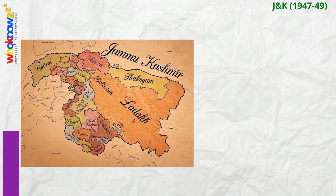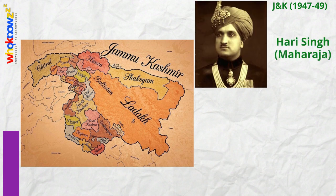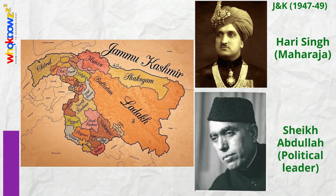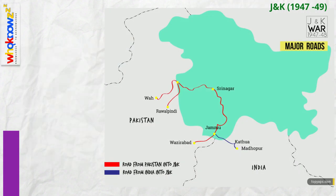Jammu and Kashmir, 1947–1949: At the time of the transfer of power, the state of Jammu and Kashmir — widely called Kashmir — was ruled by Maharaja Hari Singh, a Hindu, although the state itself had a Muslim majority. Hari Singh was equally hesitant about acceding to either India or Pakistan. His rule was opposed by Sheikh Abdullah, the popular leader of Kashmir's largest political party, the National Conference, who demanded his abdication. Pakistan, attempting to force the issue of Kashmir's accession, cut off supplies and transport links. Thus, Kashmir's only links with the two dominions was by air.